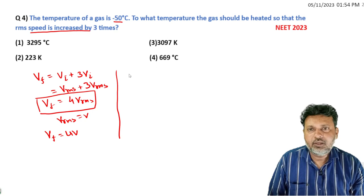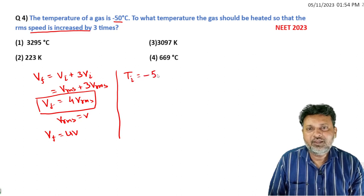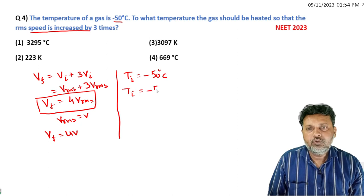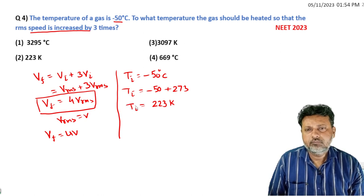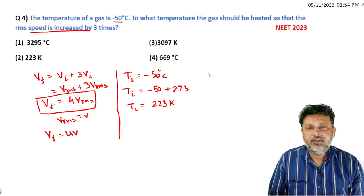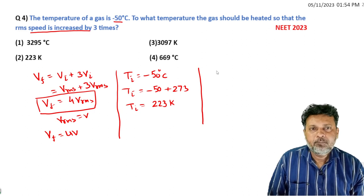If I increase temperature, the initial temperature is -50 degrees Celsius. Now convert this to Kelvin. We'll add 273, so in Kelvin it becomes 223 Kelvin.